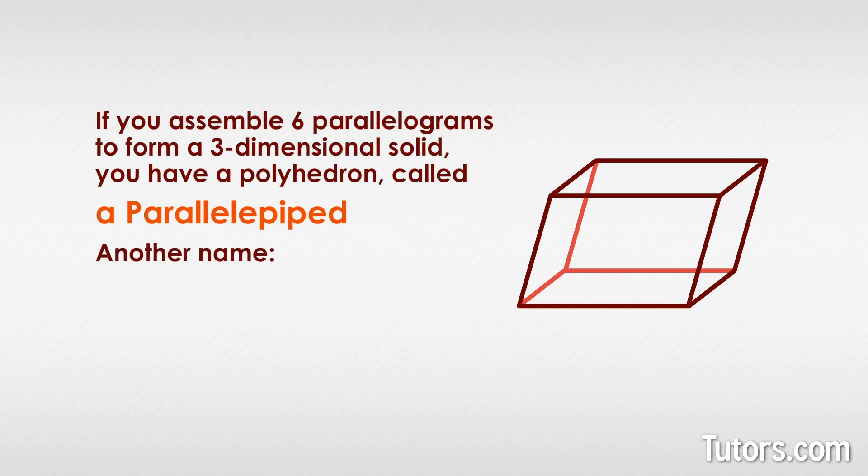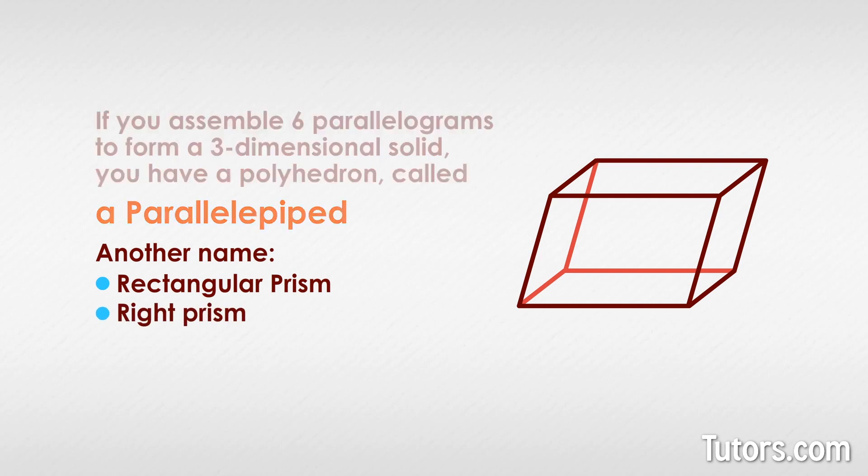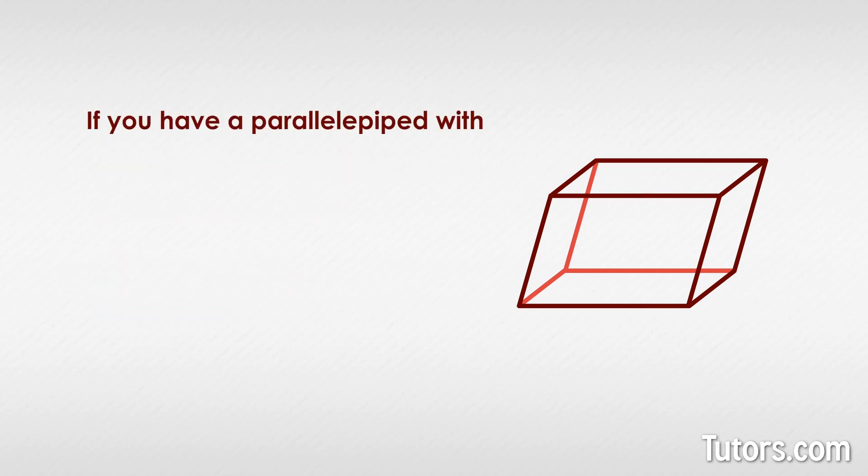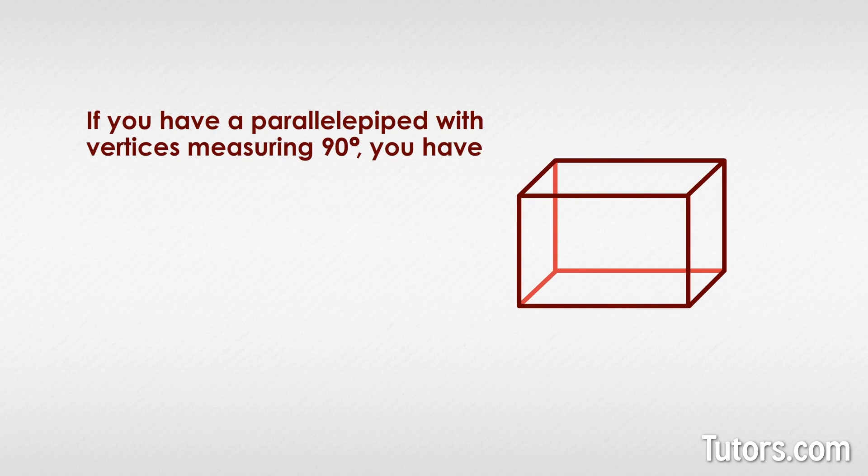Another name for this three-dimensional shape is a rectangular prism or right prism. If you have a parallelepiped with vertices measuring 90 degrees, you have a cuboid.